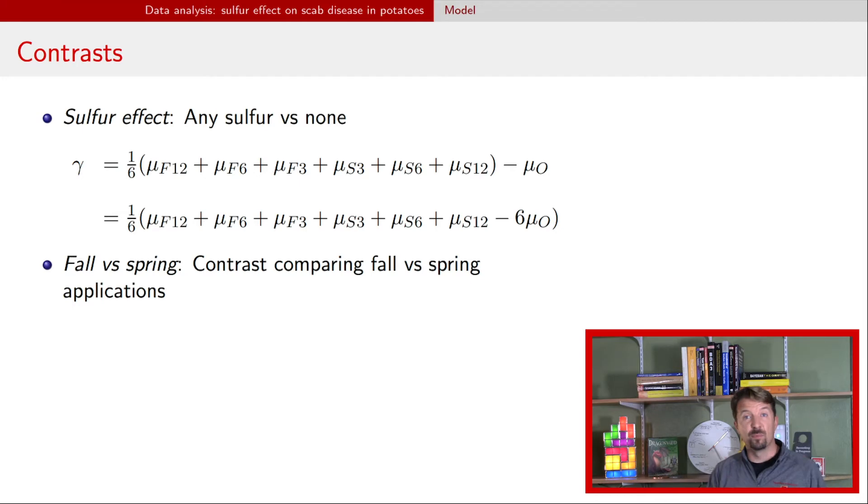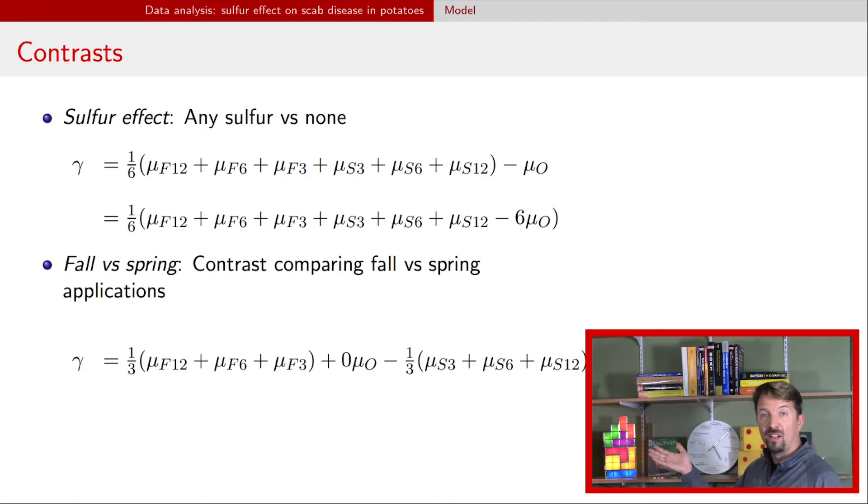If we look at fall versus spring application, we have three means that are fall, three means that are spring, one that's neither. And so what we're going to have here is we're going to have one third times all the fall application plus zero times that no sulfur application plus negative one third of the spring applications. Again, if this is zero, this indicates there's no effect of fall versus spring.